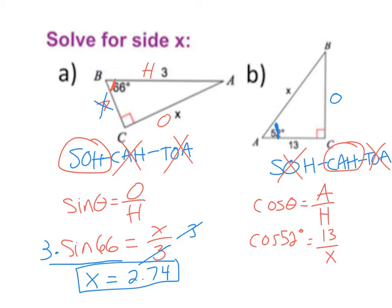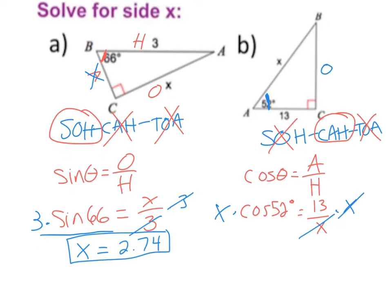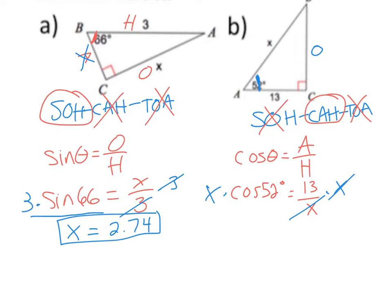Multiply X to both sides to eliminate the fraction. Now it reads: X × cos(52°) = 13. To solve for X, divide by cos(52°).